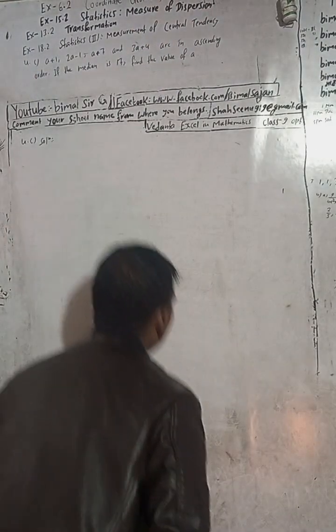Hi class 9 and 10 students, welcome back to Bimal Surge's YouTube channel. In this cold season, I am here to warm up your days and nights with exciting content. Let's chase away the winter season with mathematical solutions for class 9 and 10. The question is Exercise 18.2, second part — Measurement of Central Tendency from Vedant Excel in Compulsory Mathematics class 9. Don't forget to check the playlist for more solutions.